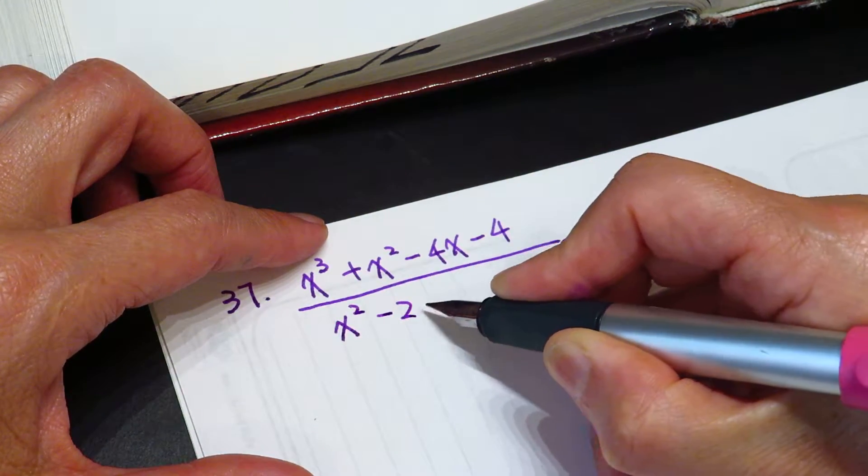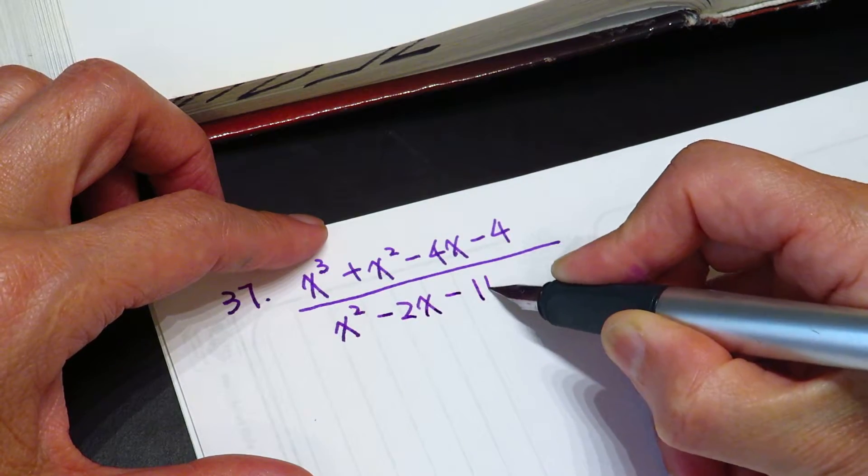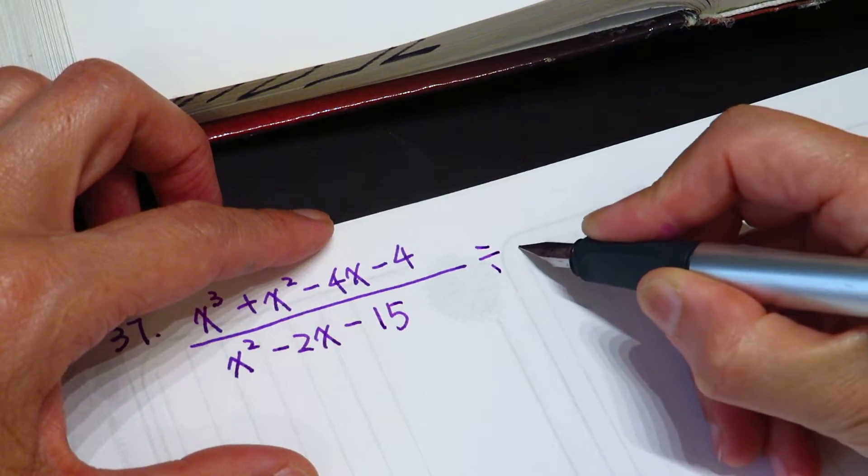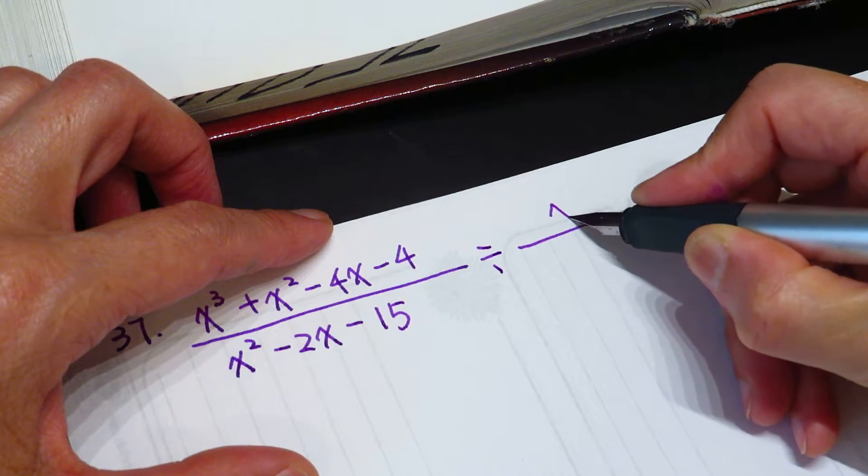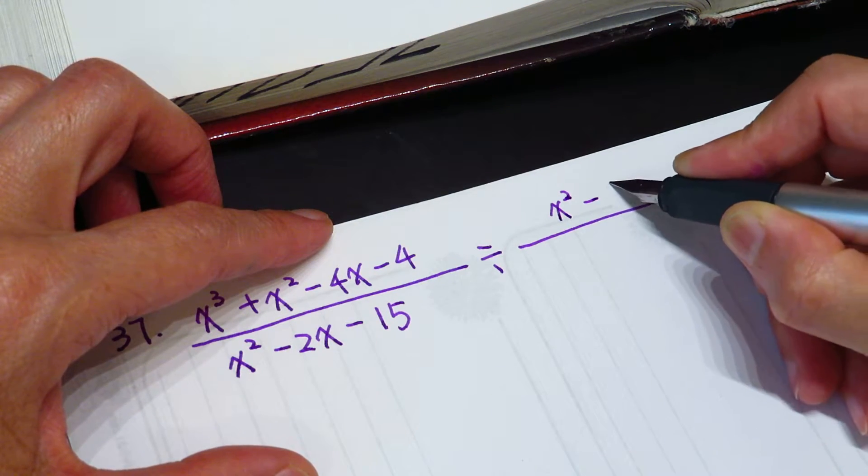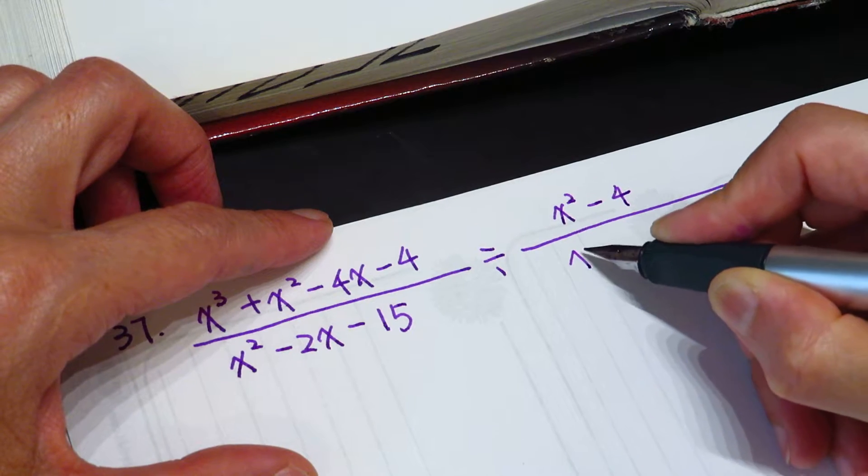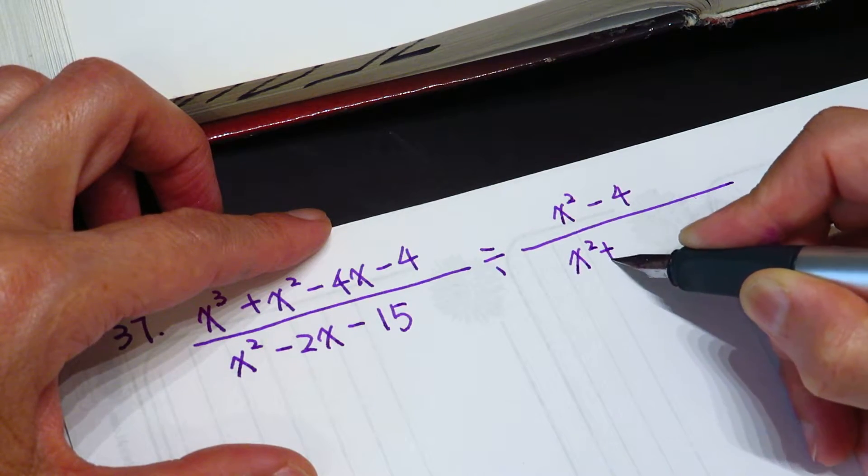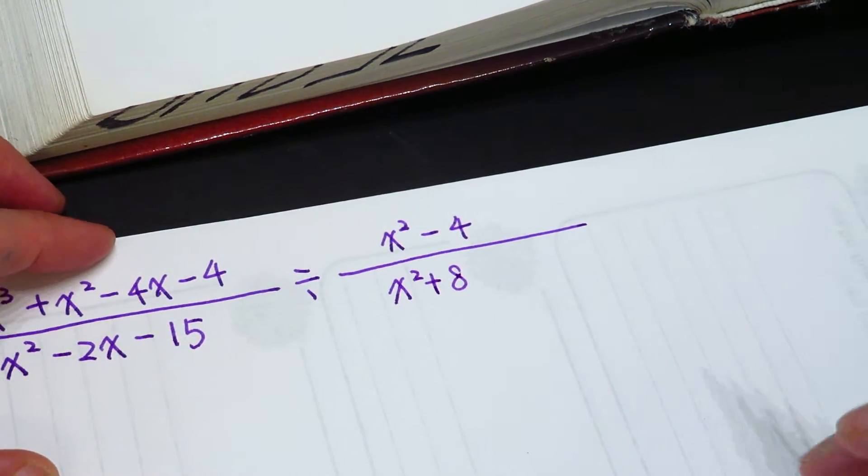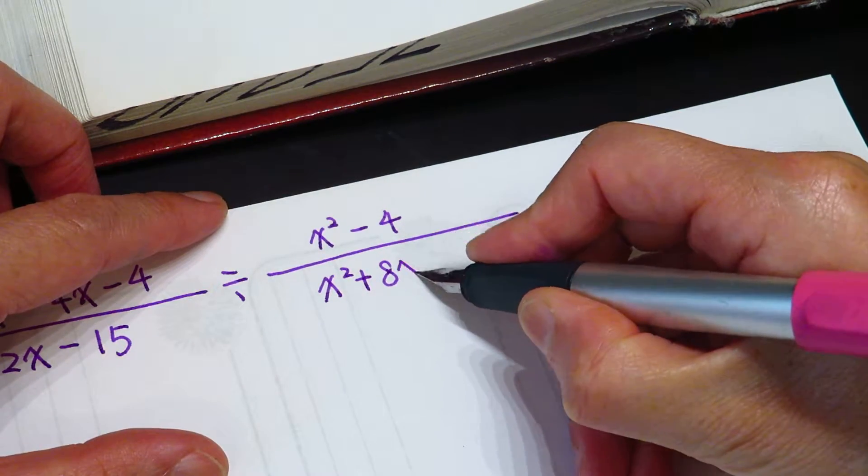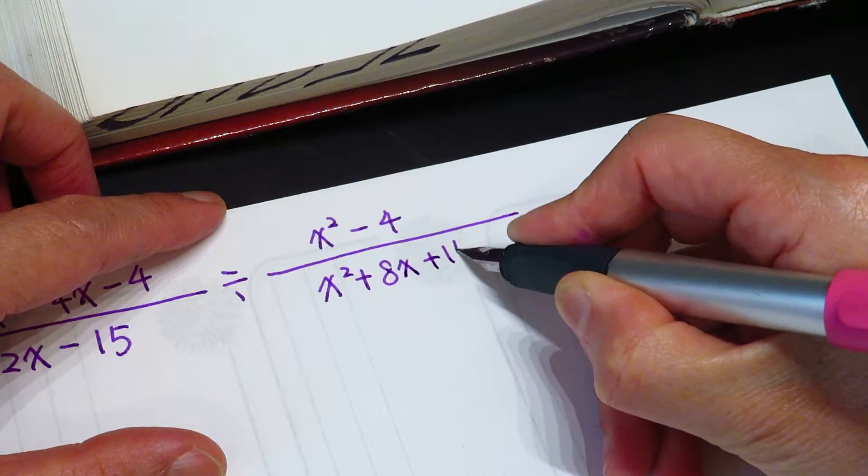minus 2x minus 15 divided by x square minus 4 times x square plus 8x plus 15. These are all quite fundamental.